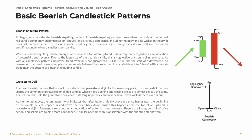The next bearish pattern that we will consider is the gravestone doji. As the name suggests, this candlestick pattern shares the common characteristic of all doji candles, wherein the opening and closing prices are almost exactly the same. The feature that sets the gravestone doji apart is its long upper wick and a very small lower wick, if there even is one. As mentioned above, the long upper wick indicates that after buyers initially drove the price higher near the beginning of the candle, sellers stepped in and drove the price back down. When this happens near the top of an uptrend, a gravestone doji is frequently regarded as an indication of potential trend reversal. Buyers are losing control of price action, and sellers are gaining more confidence.